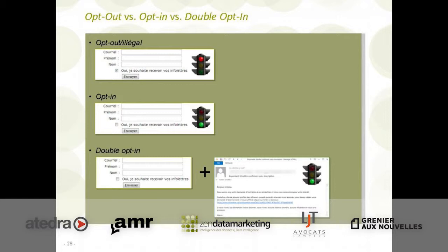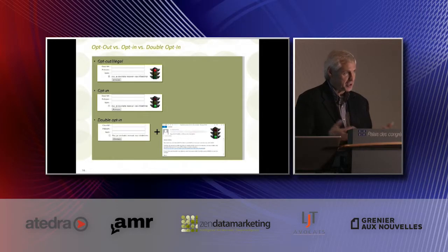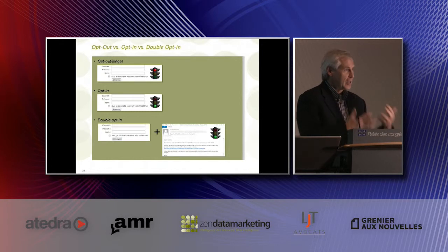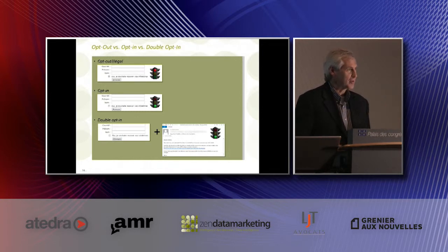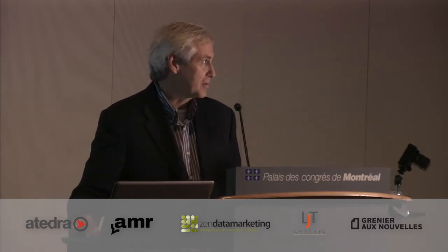Et le double opt-in : beaucoup de banques ou d'organismes dans le milieu financier l'offrent. C'est-à-dire qu'on a coché oui, et il y a un courriel dans une deuxième étape qui est retourné : « Confirmez-nous que vous avez dit oui en cliquant sur ce courriel. » Donc, c'est un double opt-in — la ceinture et les bretelles. Ils partent au phishing, et peut-être avec raison, c'est pour ça qu'ils se rendent jusque-là. Mais ça existe, c'est permis et c'est très cocheux.